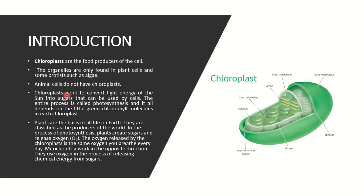If we talk about chloroplast's working: chloroplast converts the sun's light energy into sugar. It means that it converts light energy to food or sugar. These processes which convert light into sugar or food use the photosynthesis process. This photosynthesis process depends on the little green chlorophyll molecules which are stored in chloroplast.